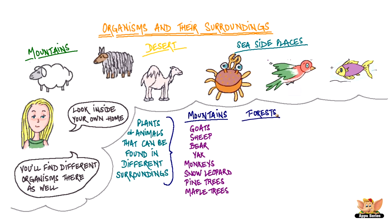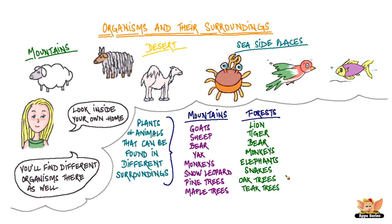Go deep into forests and you will find animals such as the lion, tiger, bear, monkeys, elephants, snakes, and trees like the oak trees, teak trees, poplar trees, and ferns and other plants. These again have adapted to the dense forest conditions.